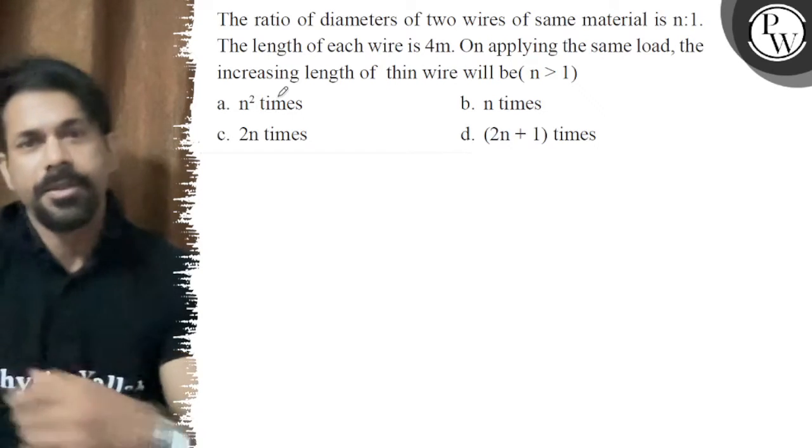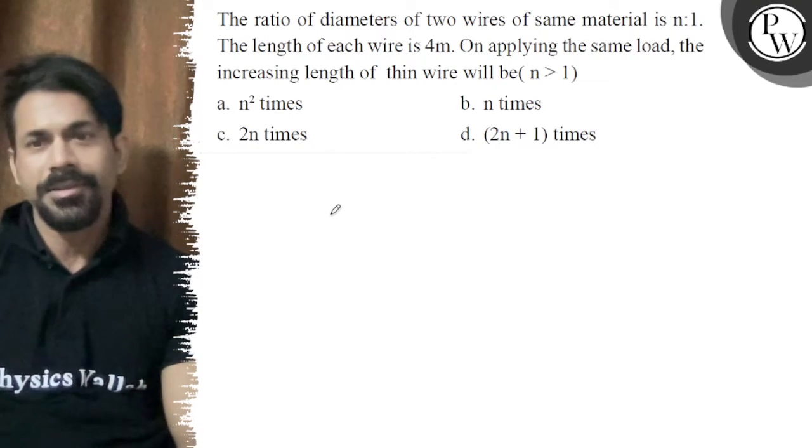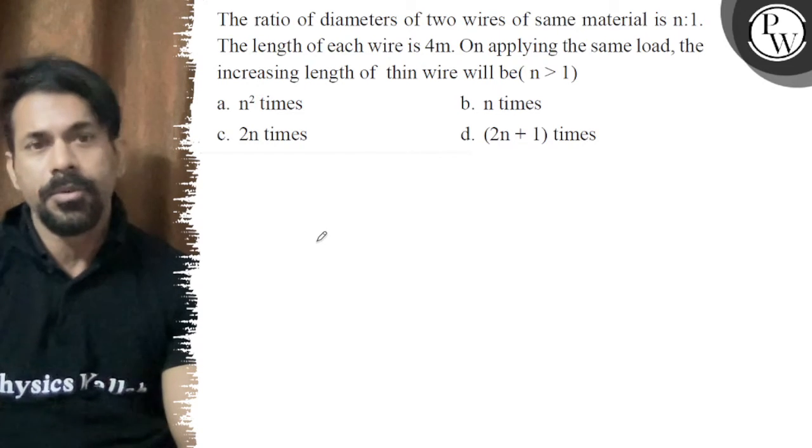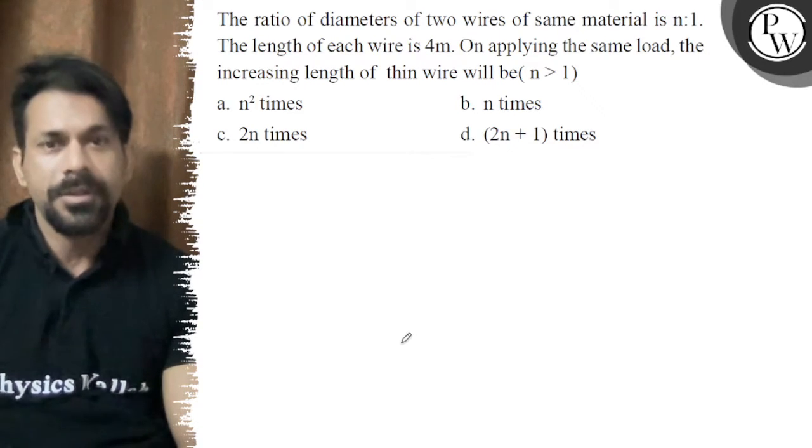Let's see the question. The ratio of the diameter of two wires of the same material is n:1. The length of each wire is 4m. On applying the same load, the increased length of the thin wire will be?